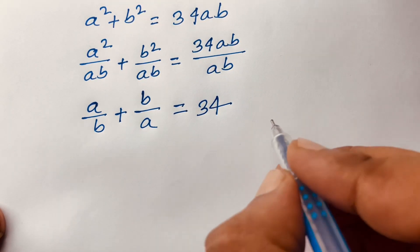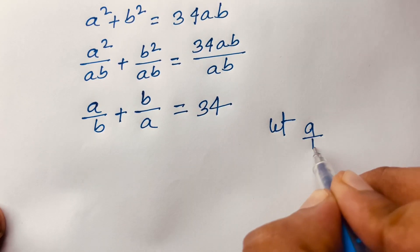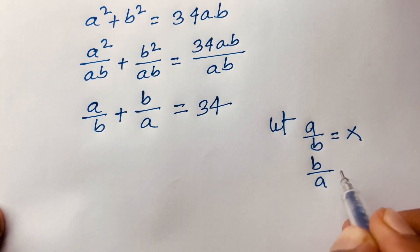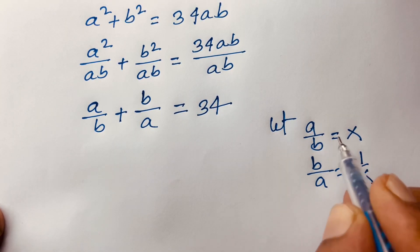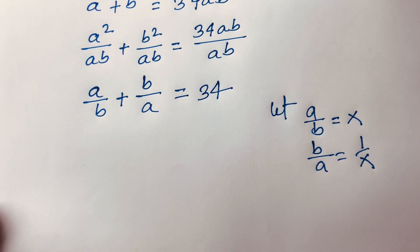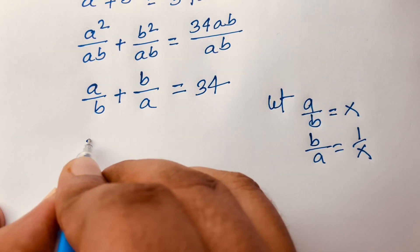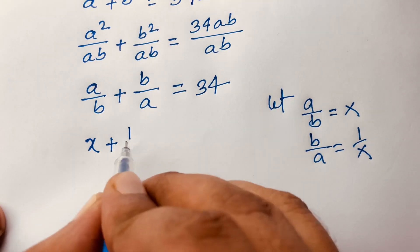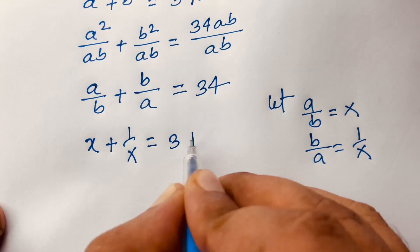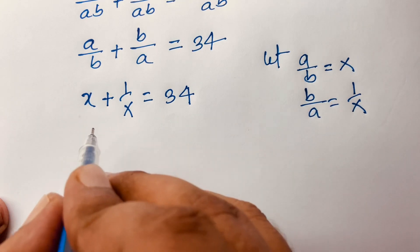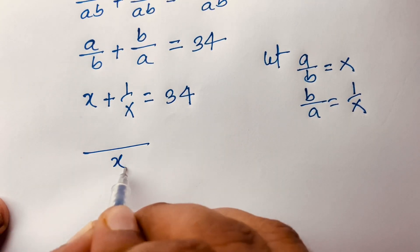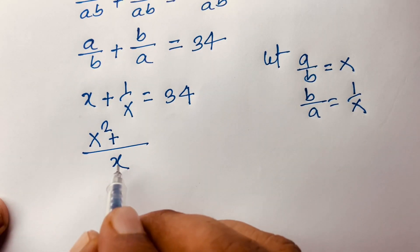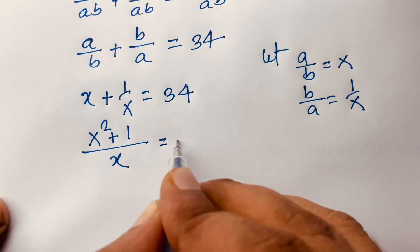Let A over B be equal to X. And in this case I can say B over A is equal to 1 over X, because A over B equals X. So I can say X plus 1 over X is equal to 34. The least common value is X, so X squared plus 1 over X equals 34.